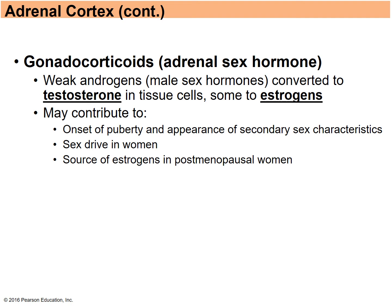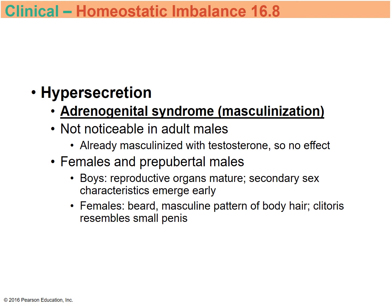Gonadocorticoids are often called the adrenal sex hormones — they are weak androgens, which are male sex hormones that can be converted to testosterone or estrogen. They may play a role in the onset of puberty and secondary sex characteristics. Hypersecretion has no noticeable effect in adult males, but in females causes masculinization such as more masculine patterns of body hair. In young boys, secondary sex characteristics may appear earlier than expected.